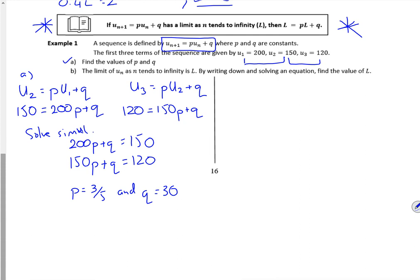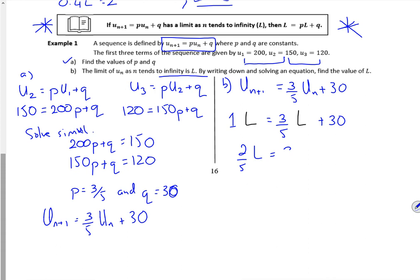So now it says, what's my limit? So my un plus 1 is 3 fifths of un plus 30. So if I do the limit bit now, change the un plus 1 into L. I've got 1 lot of L minus 3 fifths lot of L. So I've got 2 fifths lot of L.